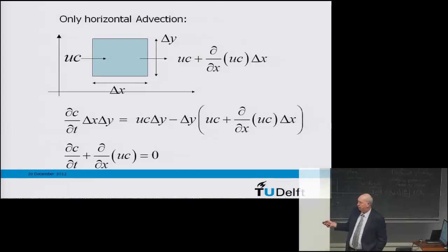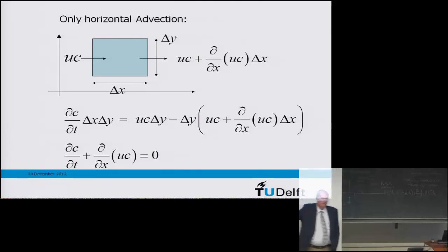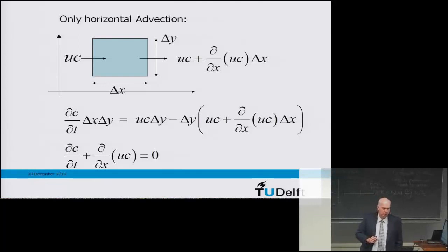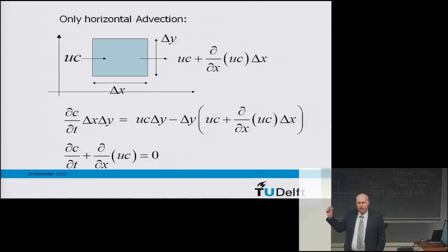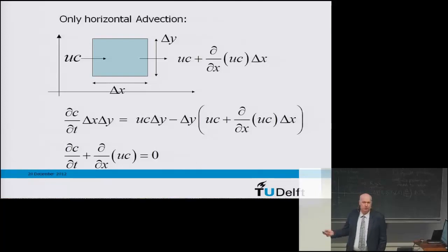We can create a rate of change because u can vary over x, or the concentration can vary over x. When neither varies, there's no change in the number of particles within that area. These are just the particles carried along with the flow — the particles are dragged with the flow into the domain. This is a very basic advection equation covering only horizontal advection. The same reasoning in the vertical direction introduces a term d/dy times vc as well.